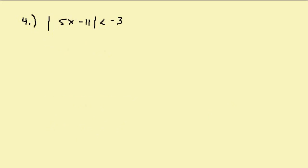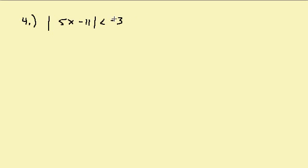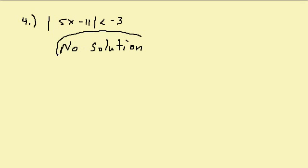Finally, the absolute value of 5x minus 11 is less than negative 3. We can't use the less-than rule because k must be positive — here k is negative. The absolute value is always positive, and a positive number is never going to be less than negative 3. So this one has no solution.